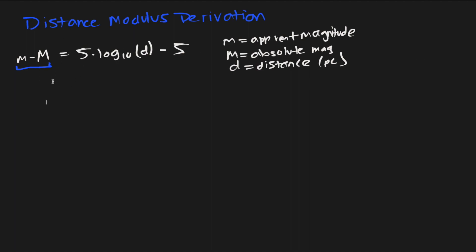To derive this we can use the flux equation which includes apparent magnitude. That equation is: m_a minus m_b is equal to negative 2.5 times log base 10 of f_a over f_b.